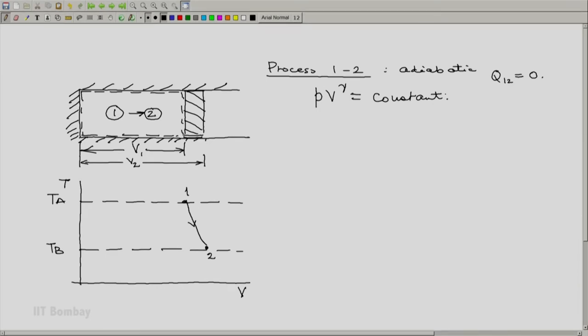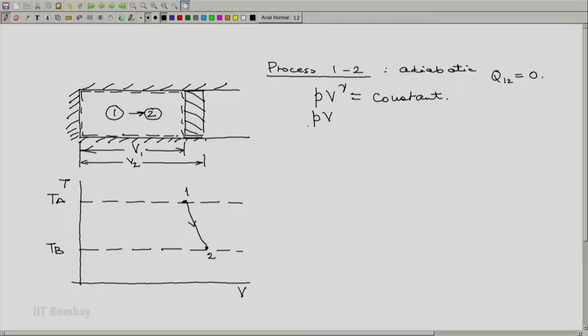We also know that because it is an ideal gas, the equation of state is applicable. So we will have PV by T to be a constant, another constant, M into R to be precise in this case.